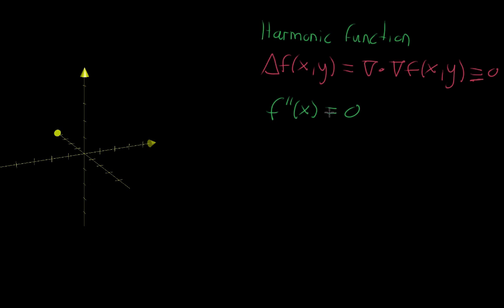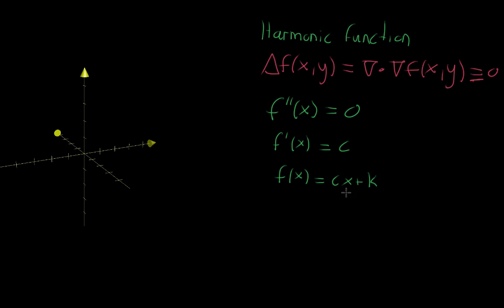Well, we can integrate it — we can take the antiderivative and say that means the single derivative of f... what functions have a derivative that's zero? The only functions are the constant ones, so c is just going to mean some constant here. And if you integrate that again — what function has as its derivative a constant — it's going to be that constant times x plus some other constant k. So basically linear functions. If you're thinking of a graph, it's just something that's got a line passing through it like that.